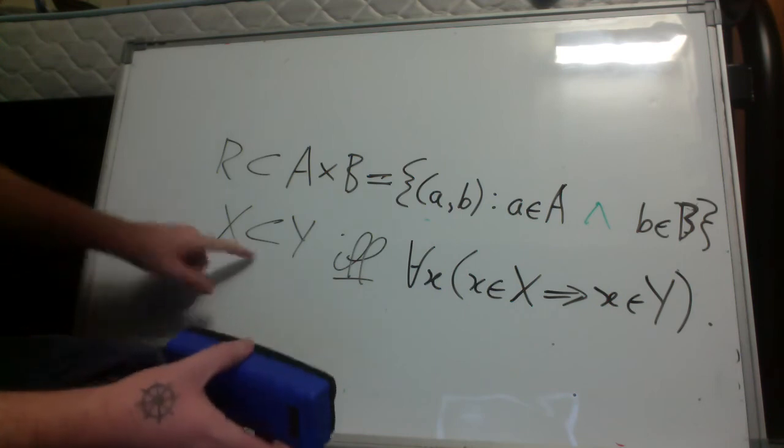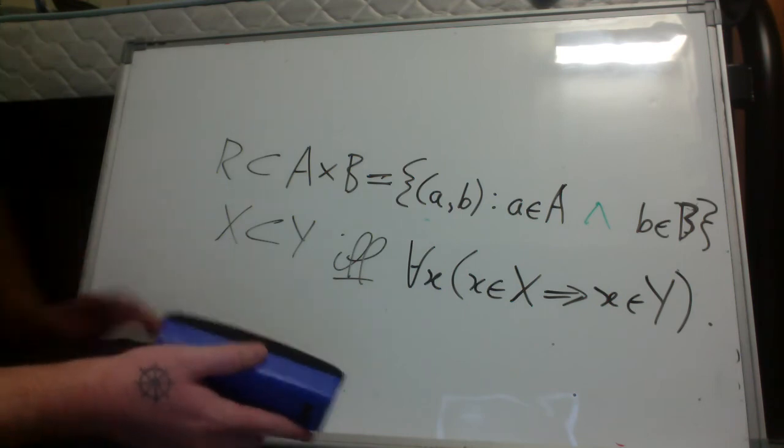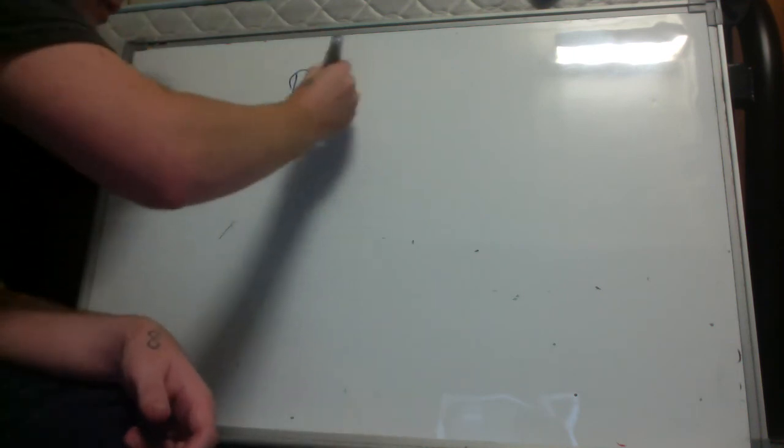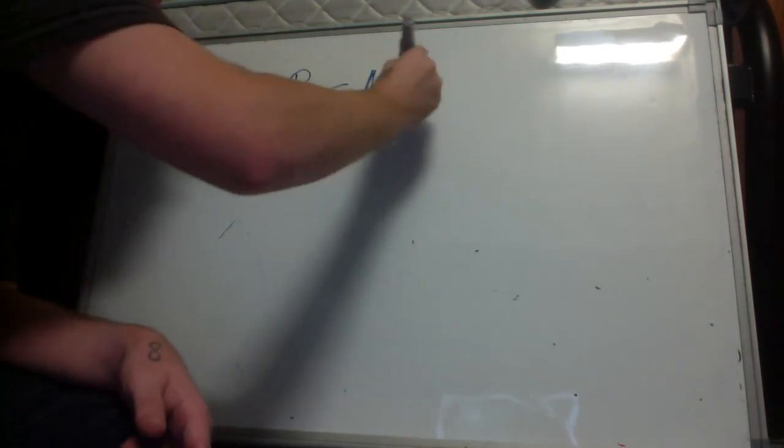So now we know what a subset is. So we also know what a relation is. So a relation is a subset of a Cartesian product of two sets. Binary relation: r subset a cross b.